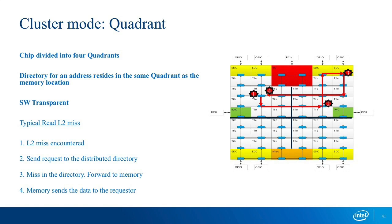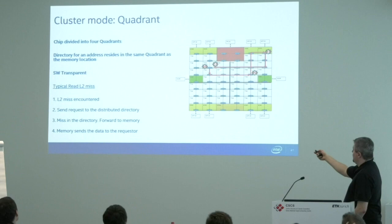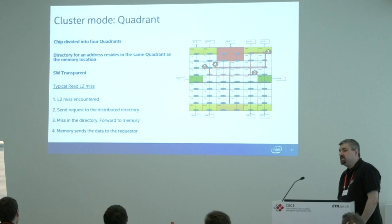In quadrant mode, we modify the hash function so that the tag directory is guaranteed to be in the same quadrant as the memory controller that holds the physical memory for that cache line. The traveling times are a lot shorter. Unless you have a very good reason, don't use all-to-all. First recommendation: use quadrant mode everywhere as much as possible.